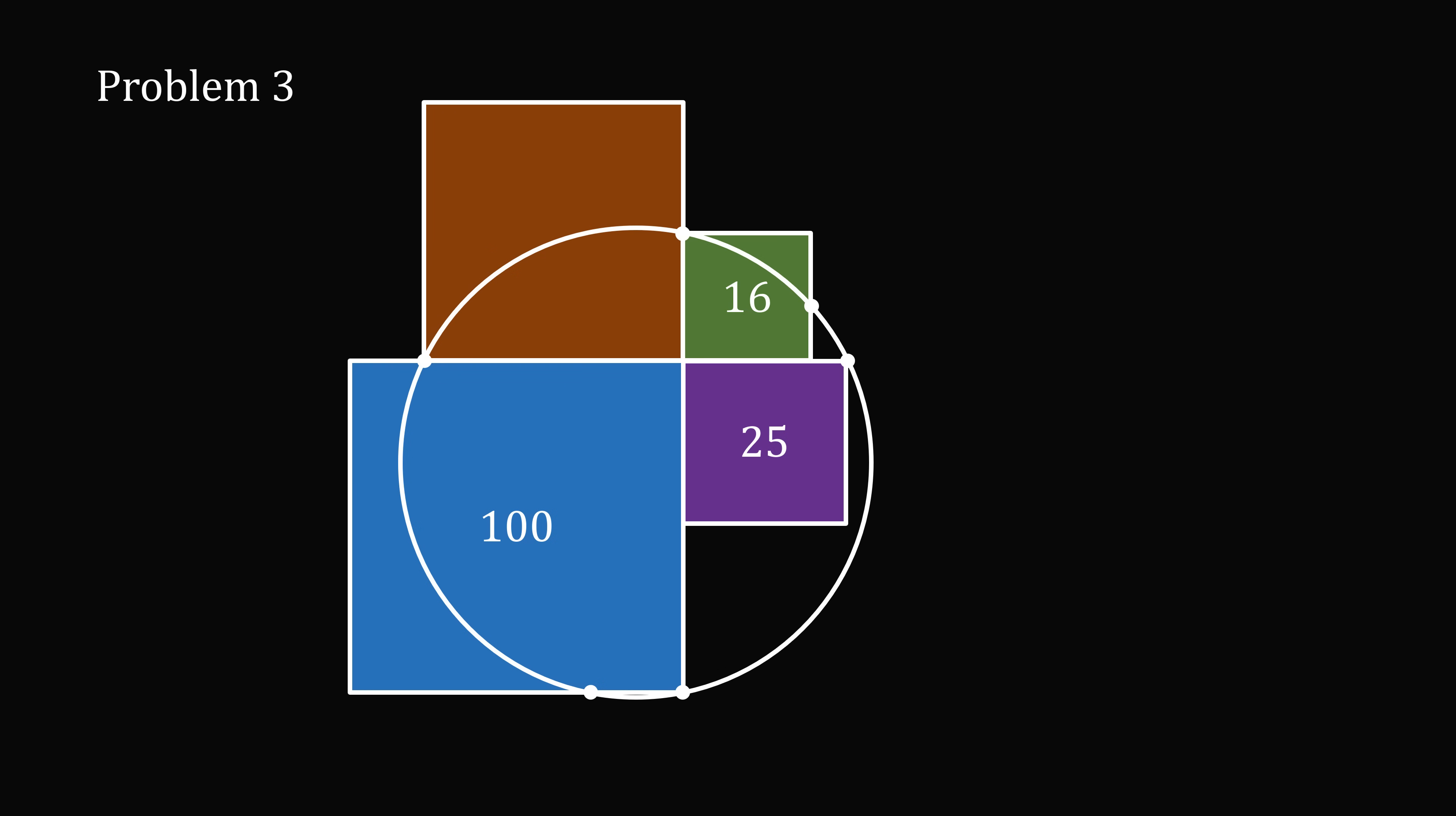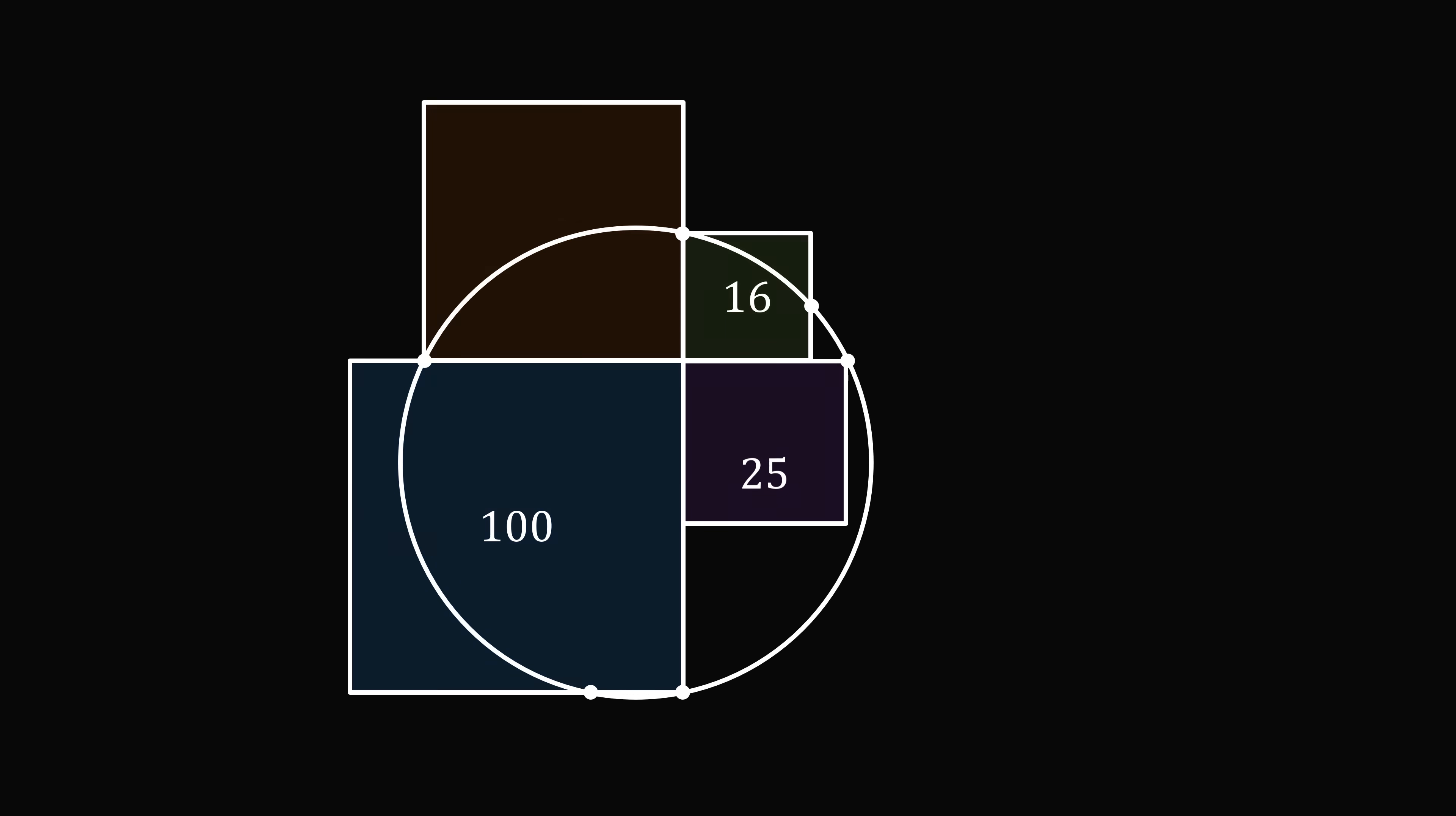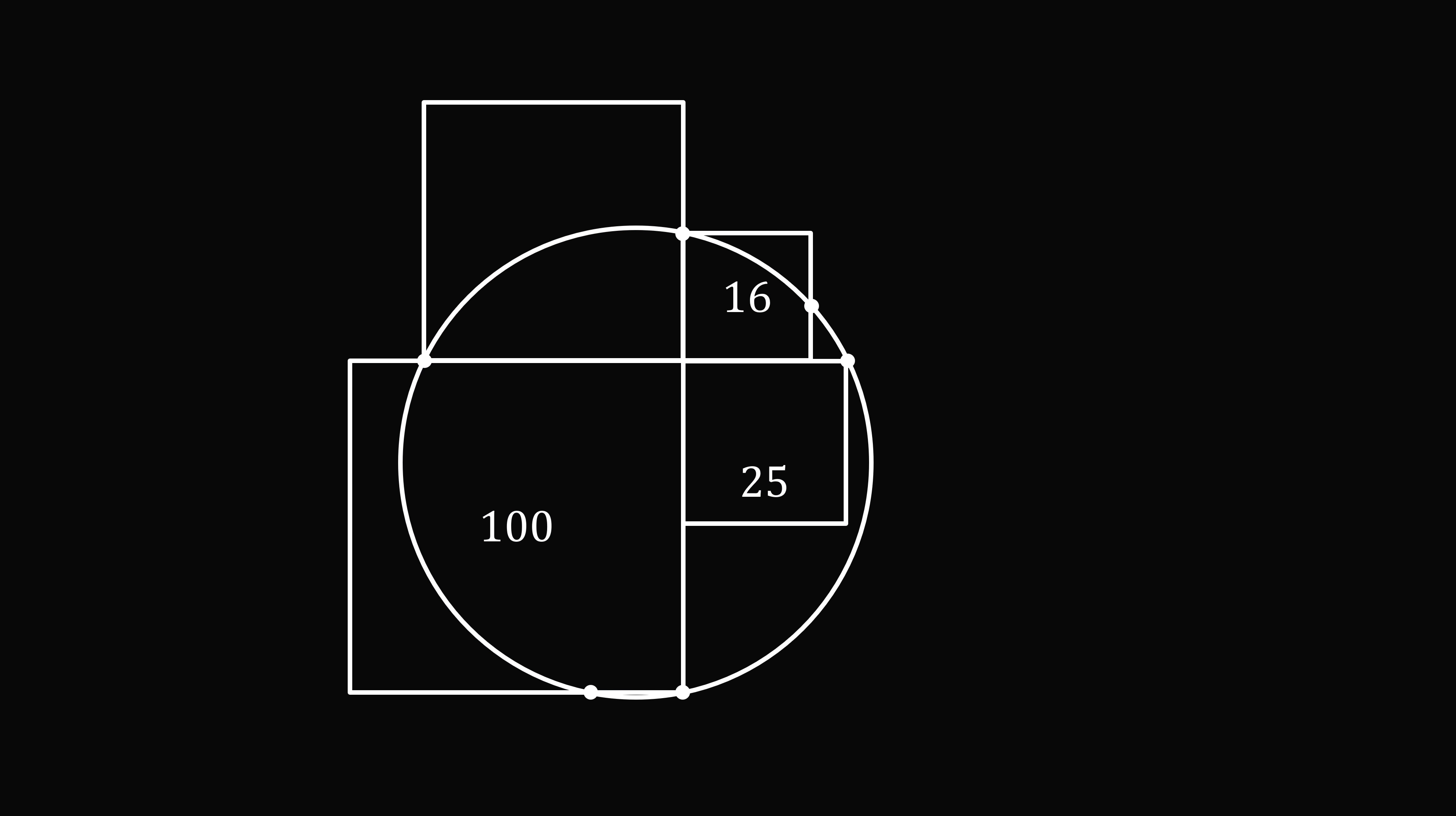So, now let's solve problem 3. The first thing we'll do is we'll calculate the side lengths of each square. So, the square with area of 16 will have a side length that's equal to 4. The square with area of 100 will have a side length equal to 10. The square with area 25 will have a side length equal to 5. Finally, let the rest of this chord have a side length that's equal to x.